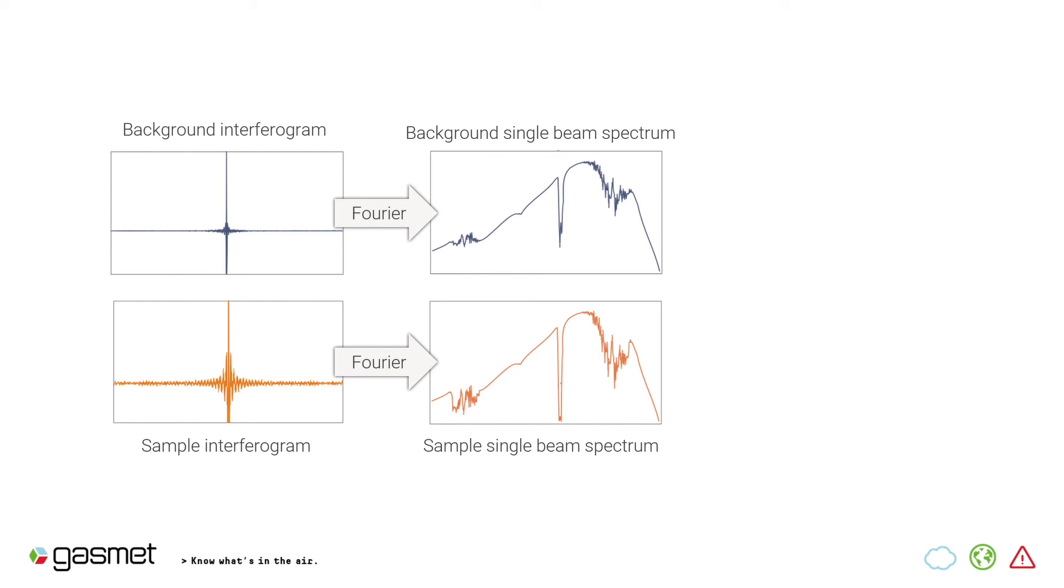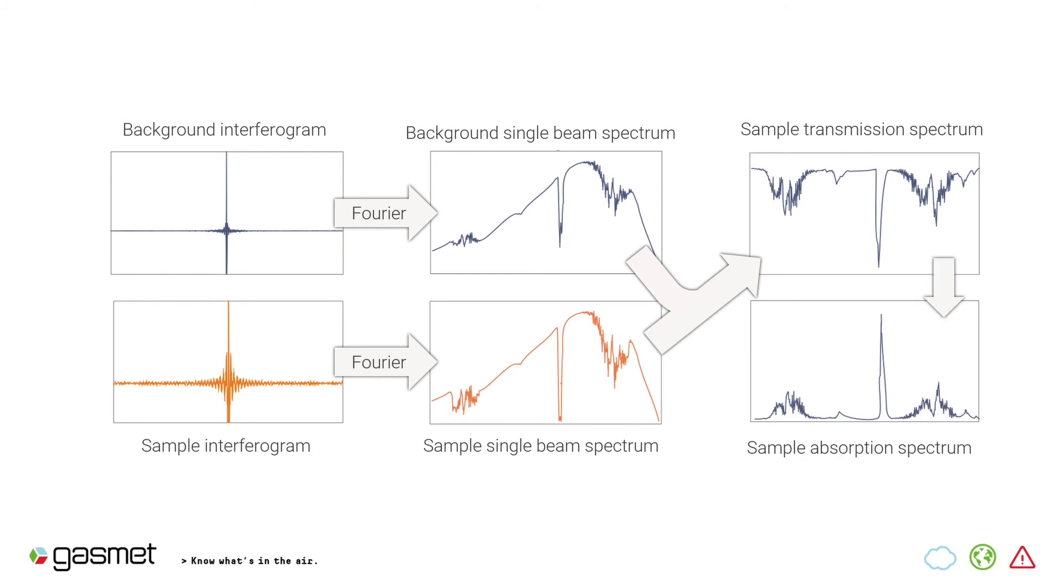Now, when we compare these two, we see what is the difference. So, how much of each wavelength went through the sample compared to the background? This is a transmission spectrum. This can be changed into telling us how much of each wavelength was absorbed by the sample. And this is an absorption spectrum. And these are what we use here in GASMET.